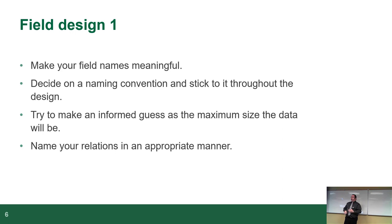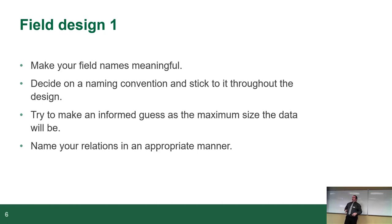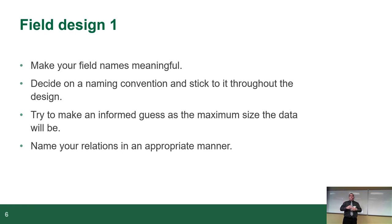There's one other data type not mentioned much in the slides because each database server calls it something different: TEXT. It holds a lot of text — limited only by your disk space. Wikipedia articles, note-taking software — those use text fields. Text fields are slow to query against, so use them when you have to and otherwise don't. In Postgres you can have a VARCHAR field up to 5,000 characters, so sometimes TEXT isn't what you need.